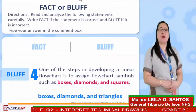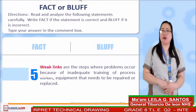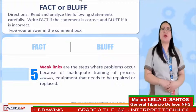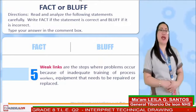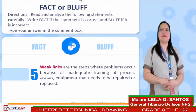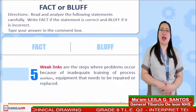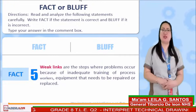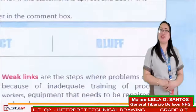Item number 5: Weak links are the steps where problems occur because of inadequate training of process workers and equipment that needs to be repaired or replaced. Is it a fact or a block? Time's up — if your answer is 'block,' awesome, you've got the correct answer. Great job, my dear learners!